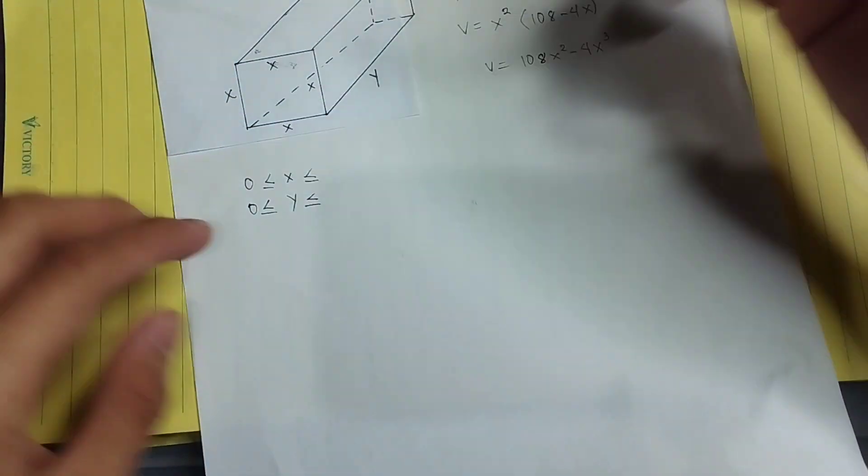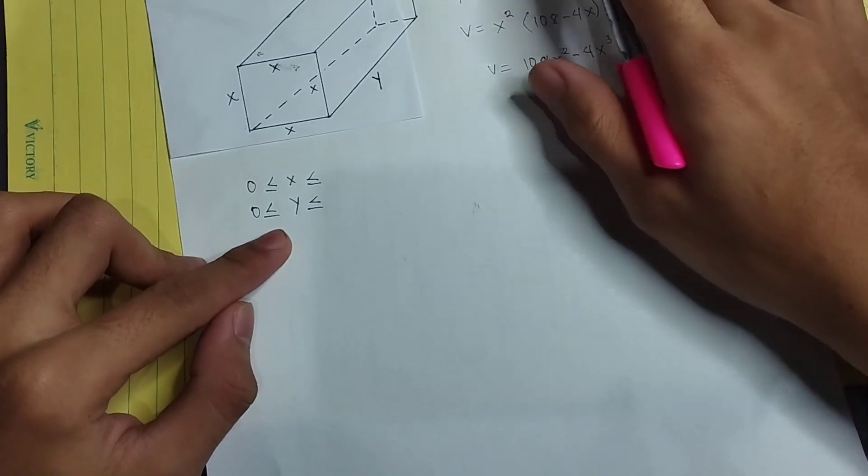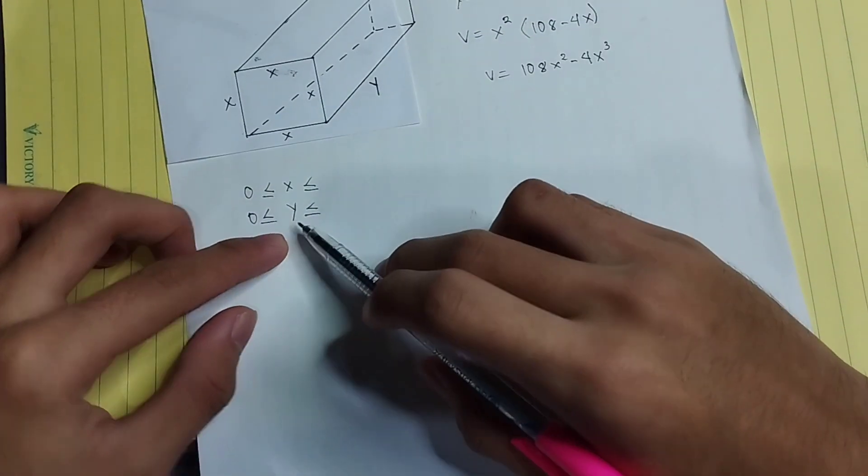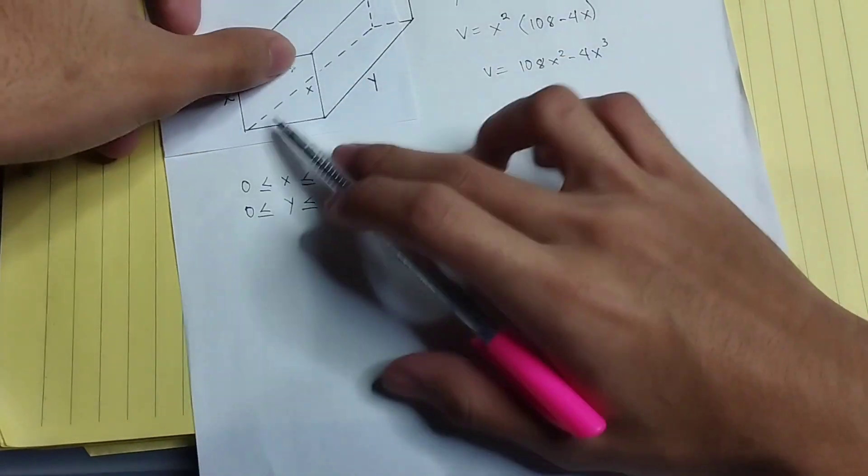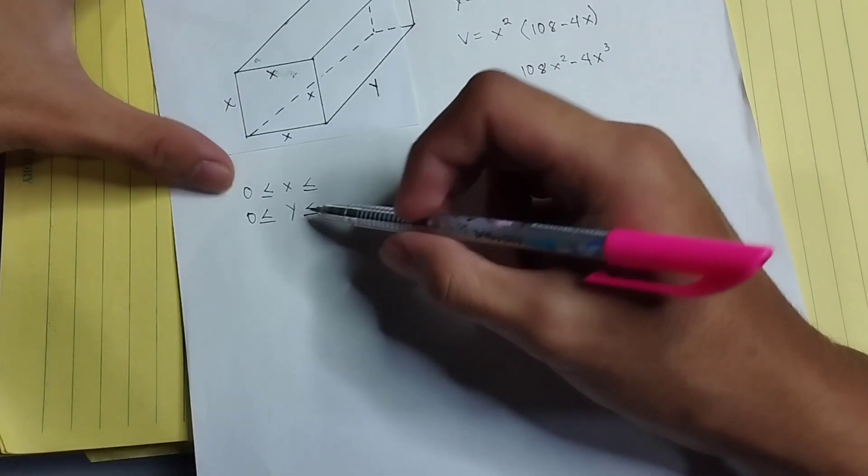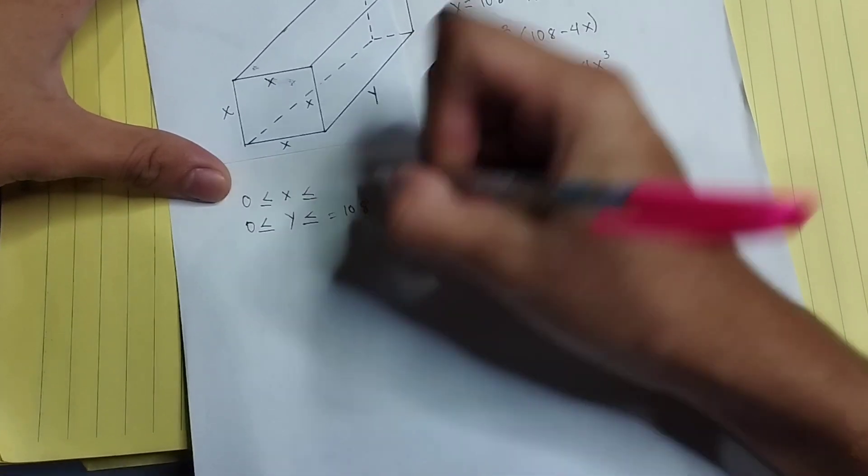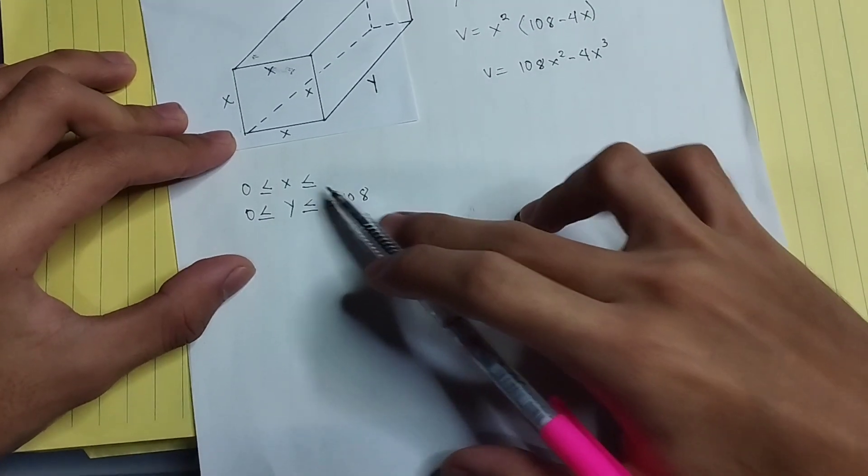After that, since the length and the girth may not exceed 108 inches, so the length and the sum of the girth are the same. So I can say that y, which is the length, can be 108, and then in order to get the x, I divided by 4 to get 27.